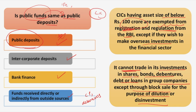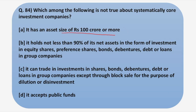Moving back to the question: Statement 1 — asset size of 100 crores or more — is TRUE, as it is one of the eligibility criteria. Statement 2 — holds not less than 90% of net assets in investments — is also TRUE. Statement 3 — it can trade in investments — is NOT TRUE, because CICs cannot trade in shares, bonds, debentures, debt, or loans in group companies. Statement 4 — it accepts public funds — is TRUE. So the answer is option C.